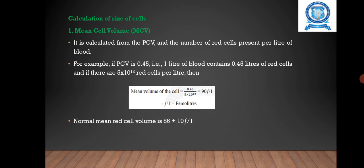Next we are going to see the different calculations of size of cells. First one is mean cell volume (MCV). It is calculated from the PCV and the number of red cells present per liter of blood. For example, if PCV is 0.45, that is one liter of blood contains 0.45 liters of red cells, and if there are 5 × 10^12 red blood cells per liter, then you will get mean volume of the cell equal to 0.45 divided by 5 × 10^12.